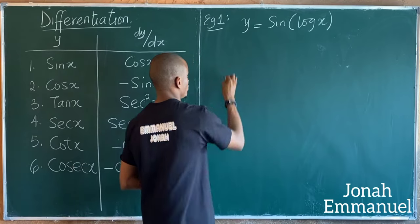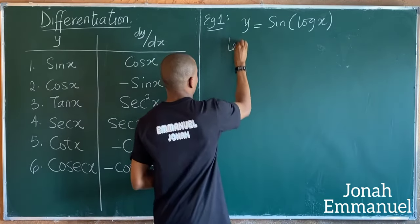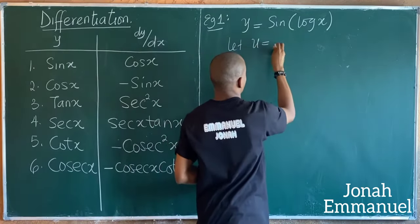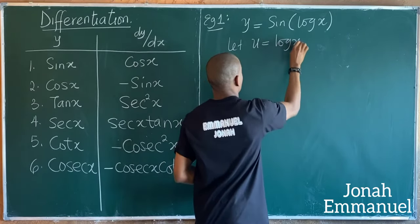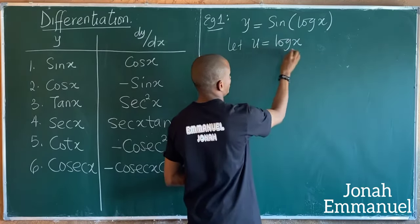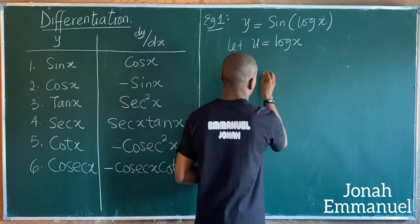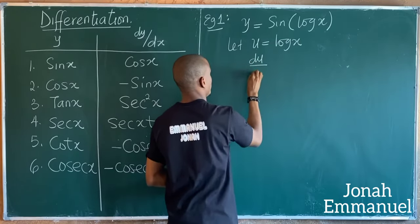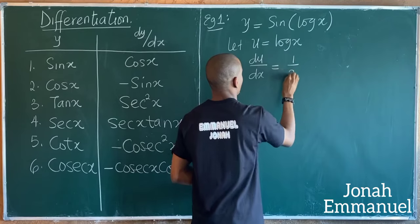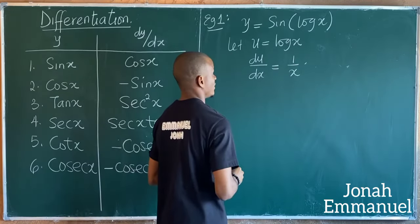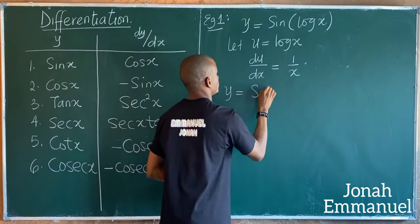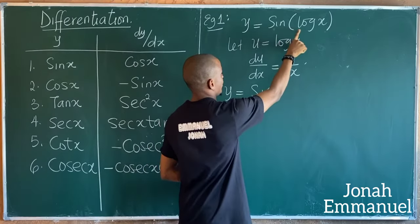This is a question on chain rule. The first step: let u be equal to what you have in the bracket, and that's log(x). If I differentiate u with respect to x, I have that du/dx is equal to 1/x.